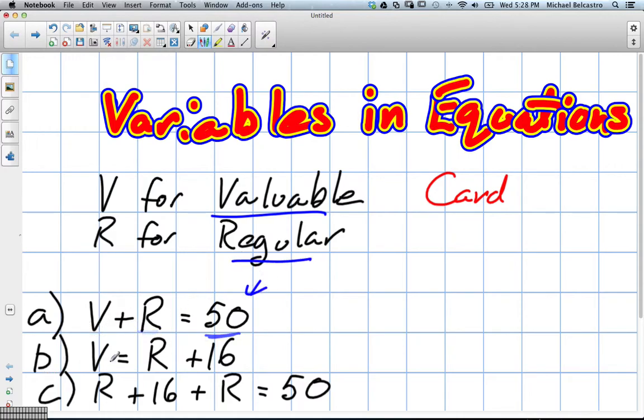What about B? They've told us that V is equal to R plus 16. What does that mean? It means that valuable cards equals regular cards plus 16. So you're adding the regular cards and the extra 16. To get what? To get V. To get how many valuable cards there are. Good.